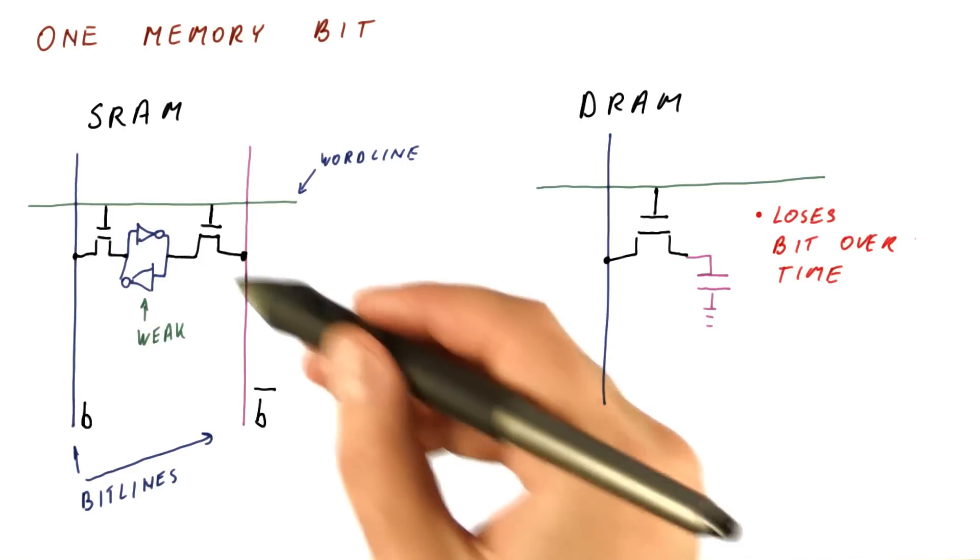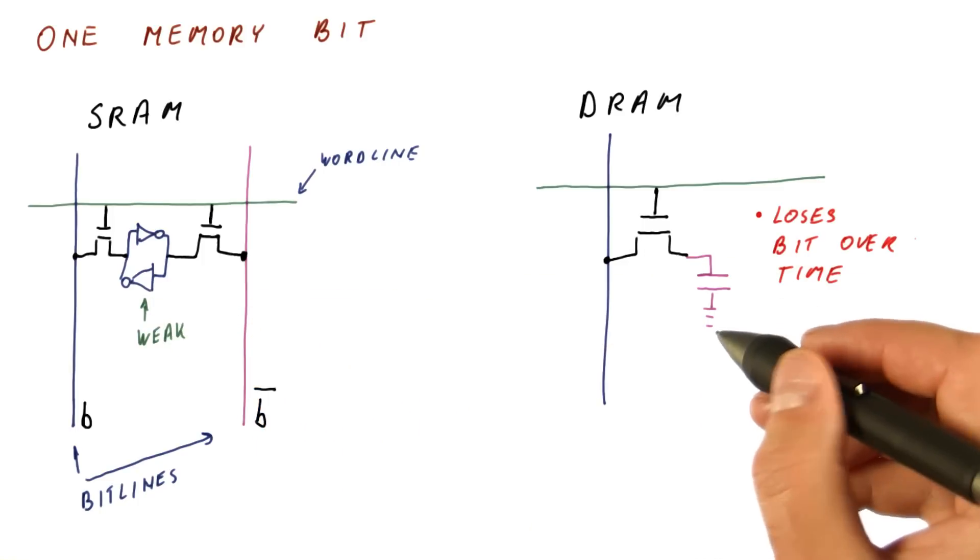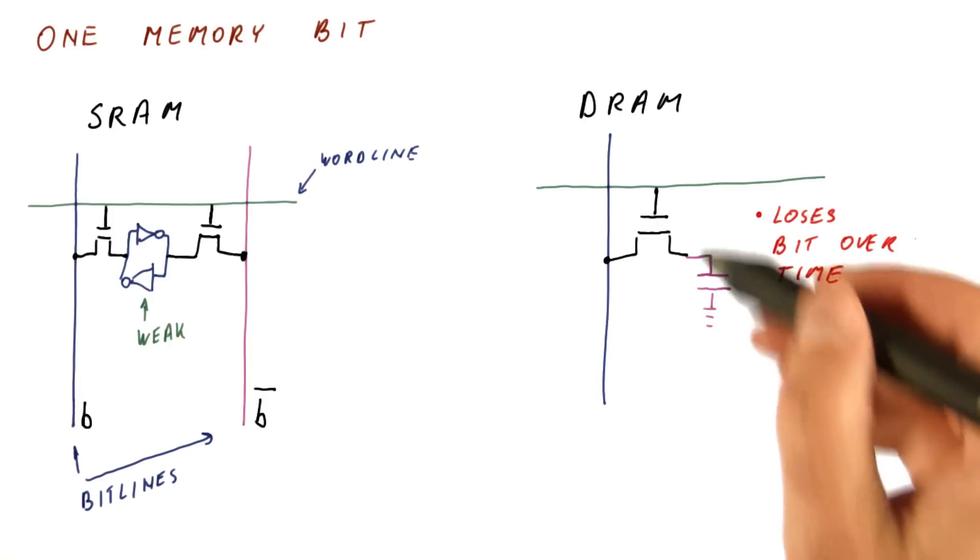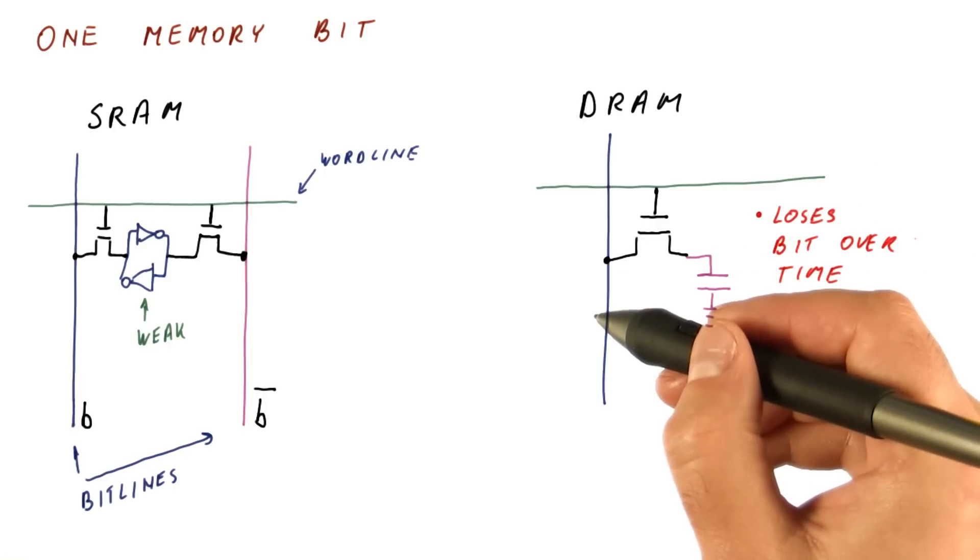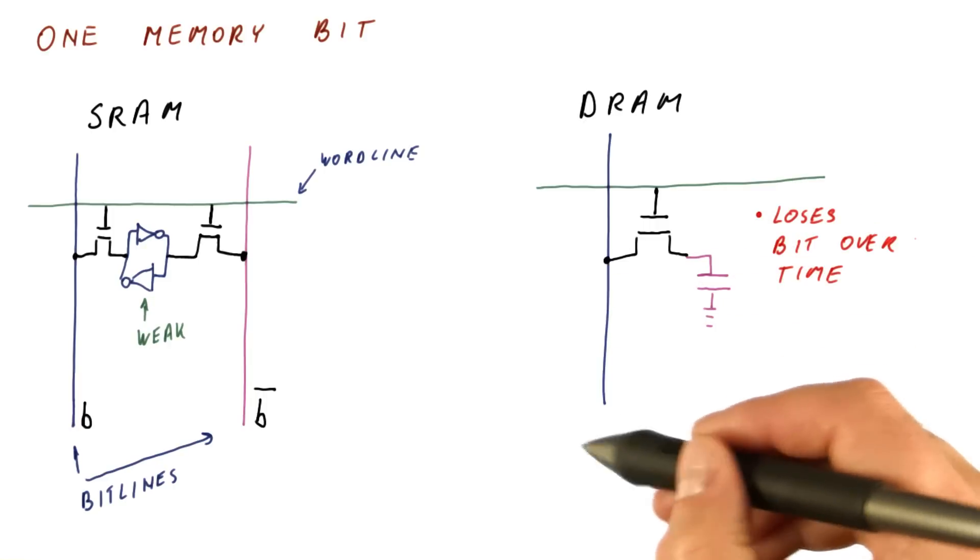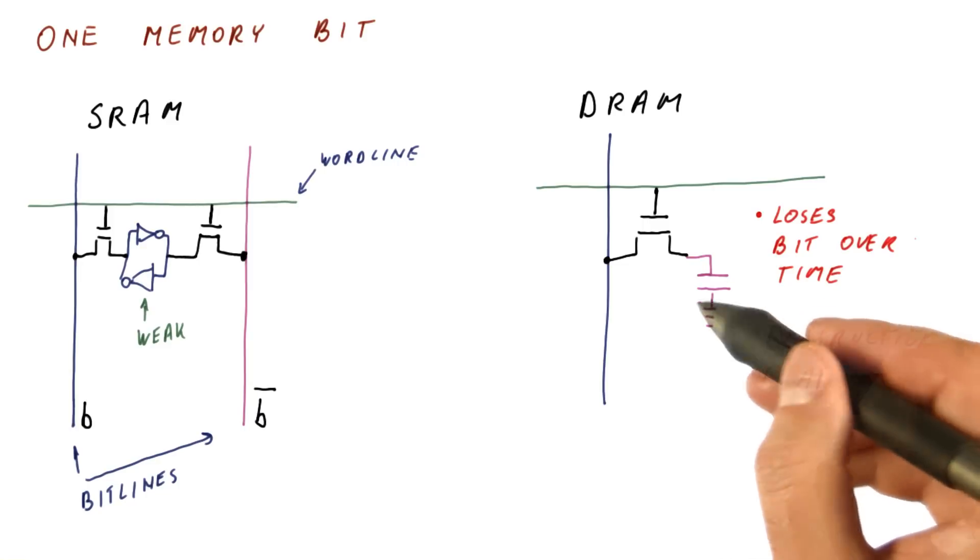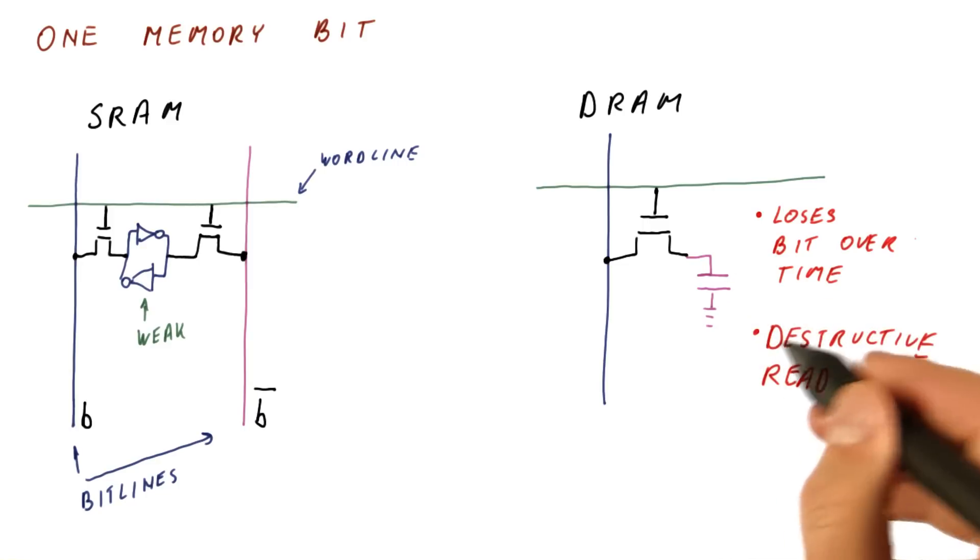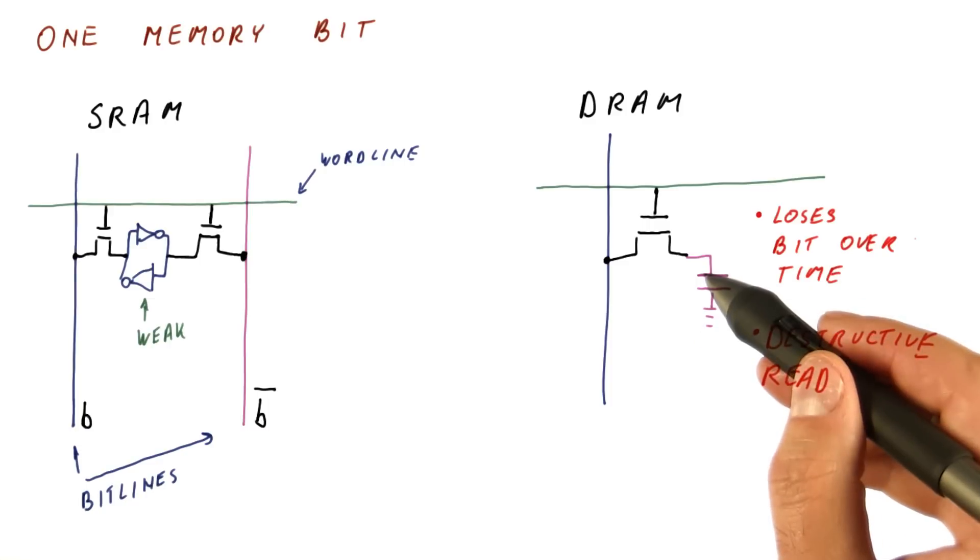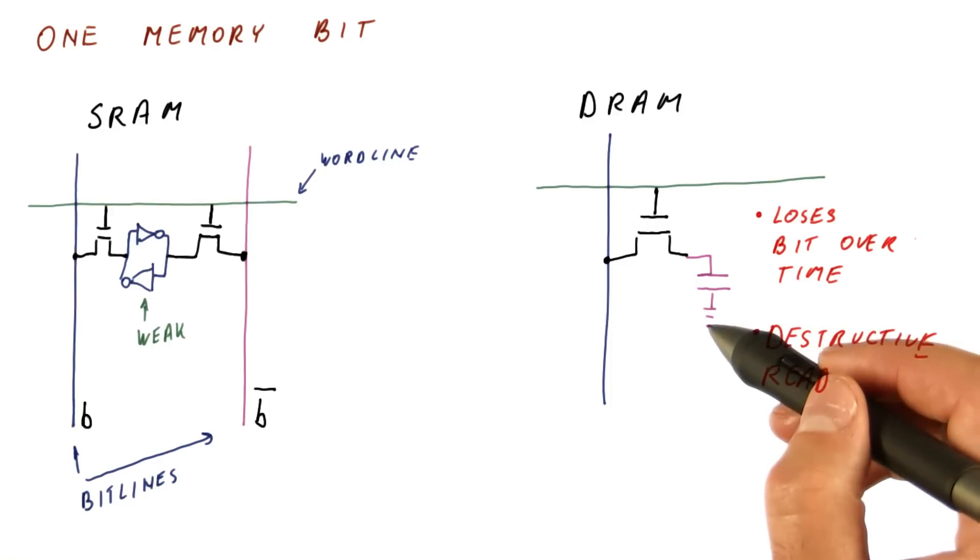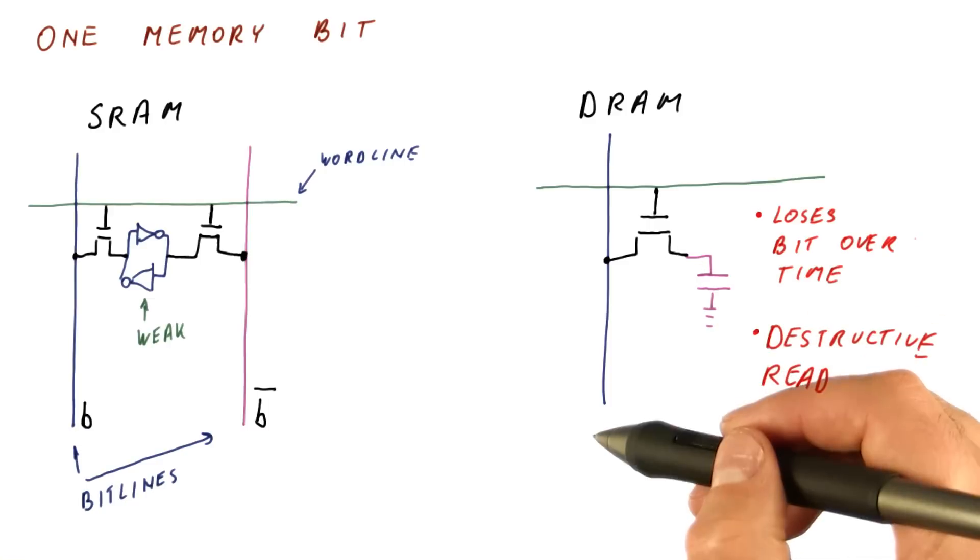Another problem with DRAM that you don't have with SRAM is that once we open the word line, the capacitor drains into the bit line. We can sense what the value was, but the capacitor is no longer fully charged. This is called destructive read. When you read a DRAM cell, you have to write it back in. It loses the value as it gets read.